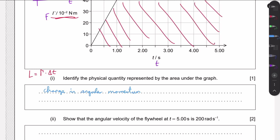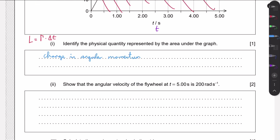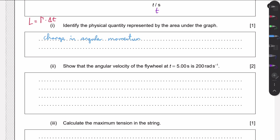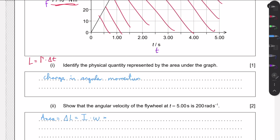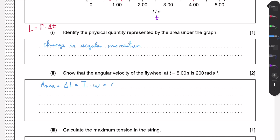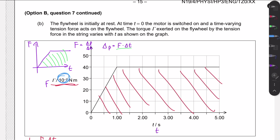Now we need to show that the angular velocity at t = 5 s is 200 rad/s. Since the area under the graph equals the change in angular momentum, and angular momentum = I × ω, we calculate that area. We split the graph into a triangle and a rectangle: the triangle covers the first portion, the rectangle the remainder.